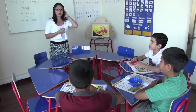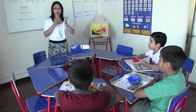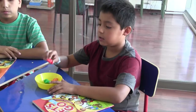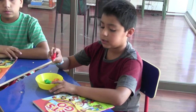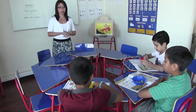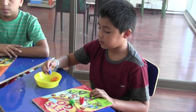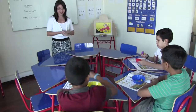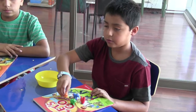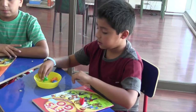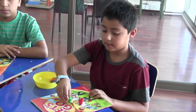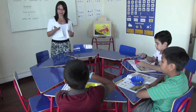Alejandro, can you name the animals, please? It is a chicken. It is a chicken, okay. It is a horse. Yes, okay. It is a cow. A cow, very good. It is a pig. Okay, excellent.